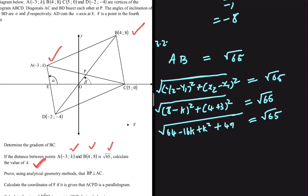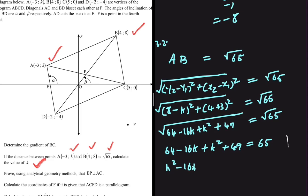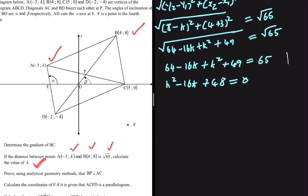Squaring both sides gives 64 minus 16k plus k squared plus 49 equals 65. Taking 64 and 49 to the right-hand side: 65 minus 64 minus 49 gives minus 48 on the right, so k squared minus 16k plus 48 equals 0. Factorizing, we find (k minus 4)(k minus 12) equals 0, so k equals 4 or k equals 12.